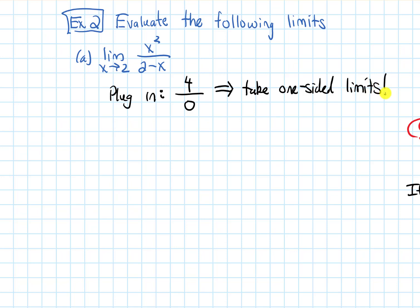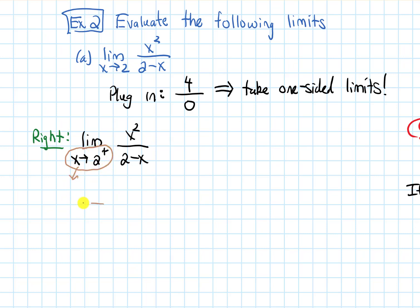We take the one-sided limits. Let's take the limit from the right first. So from the right, we get the limit as x approaches two from the right of x squared over two minus x. When we say x is approaching two from the right, that means x is getting really close to two, and because it's approaching from the right-hand side, x is bigger than two.